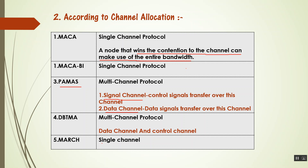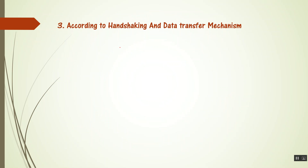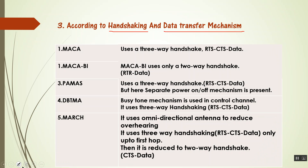Now let's see the difference according to handshaking and data transfer mechanism. MACA uses a three-way handshake: RTS, CTS, and data. MACA-BI uses only two-way handshaking — RTR and data — where RTS and CTS are both replaced by RTR (Ready to Receive). PAMAS also uses three-way handshaking like MACA — RTS, CTS, and data — but here a separate power on/off mechanism is present, with the addition of a separate signaling channel.